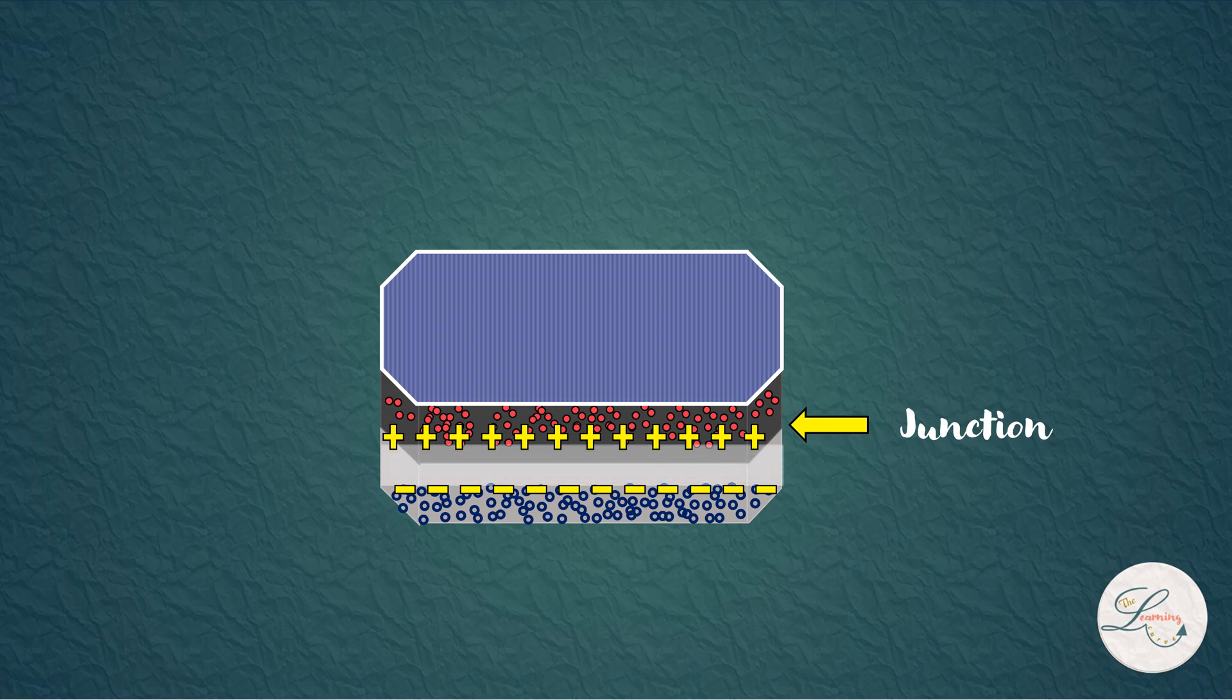A depletion region is also formed where there is no free electron or holes. When the sunlight strikes the n region, it penetrates and reaches up to the depletion region. This energy is sufficient enough to generate electron and hole pairs in the depletion region. Due to the presence of electric field, the electrons move to the n-type region and the holes to the p-type region.